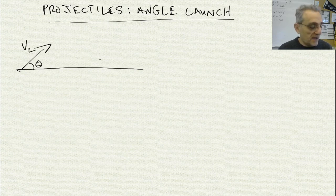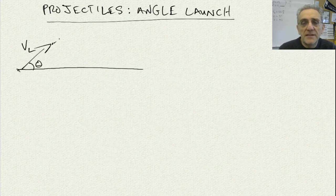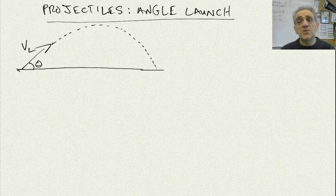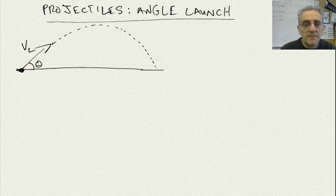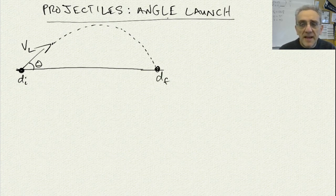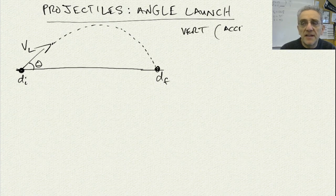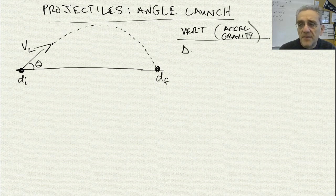The launch velocity is VL. This projectile is going to travel and come back down to the same height. This is really the most important part of this problem — it's a level ground. So the initial position, which we'll call DI, and the final position we'll call DF. That means that vertically, under the influence of acceleration due to gravity, we know that delta D equals zero.